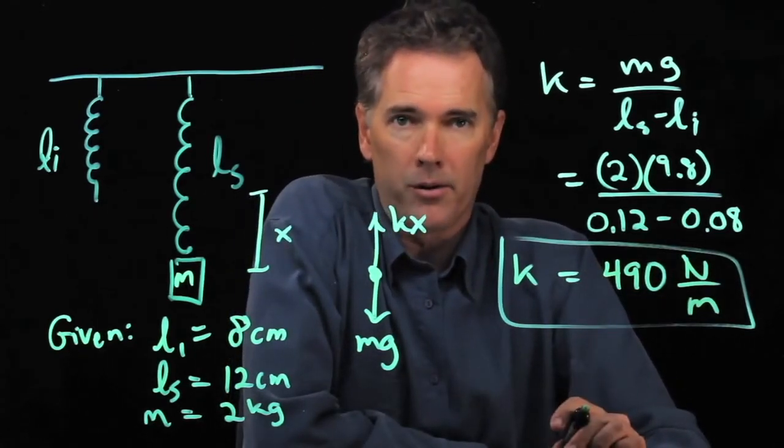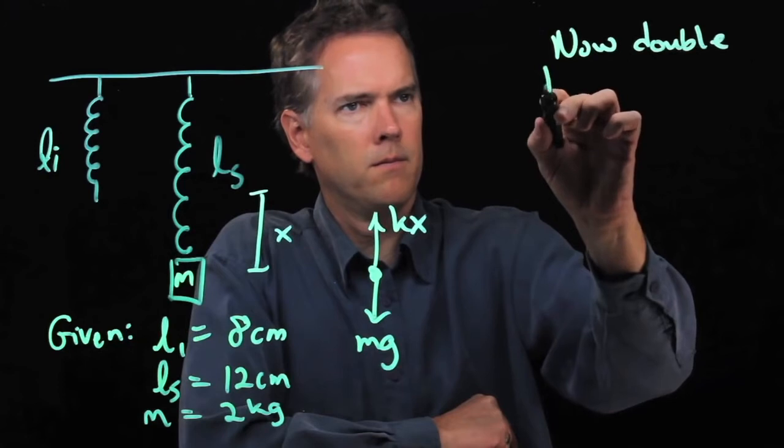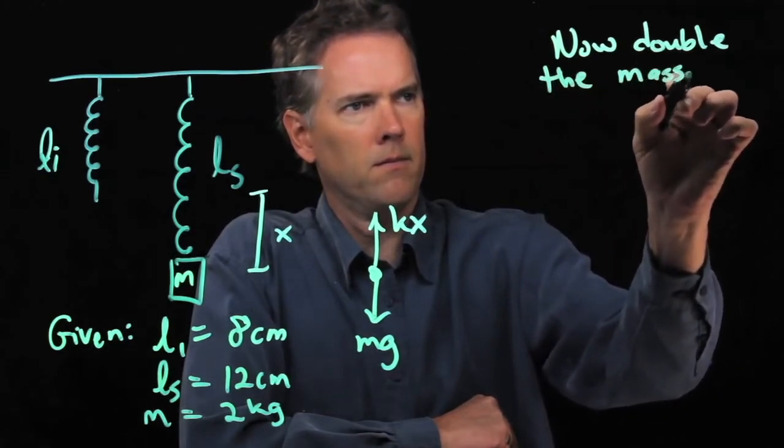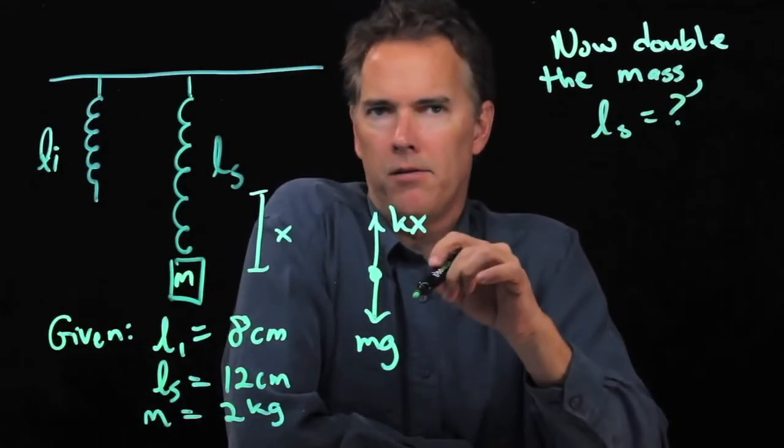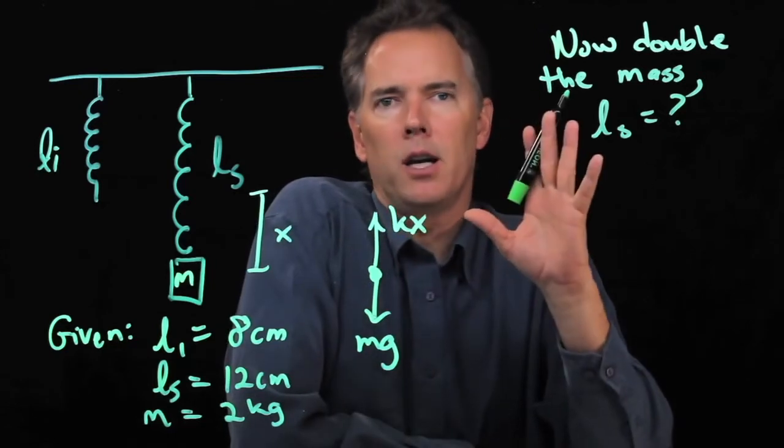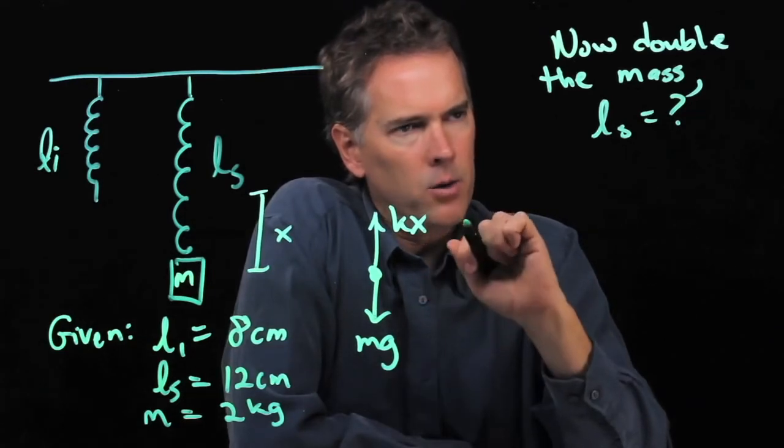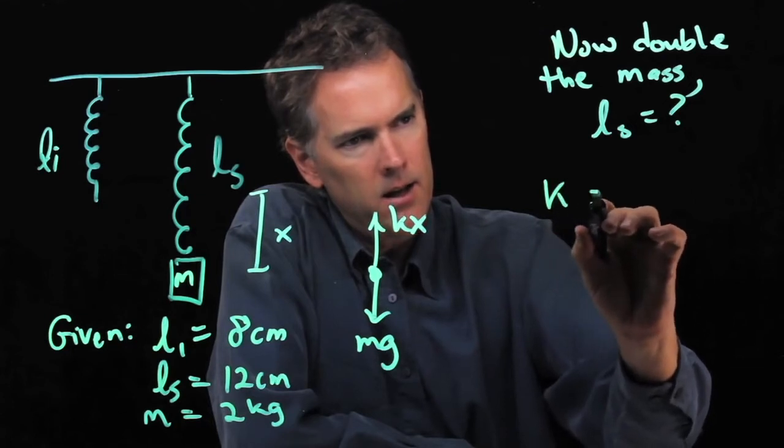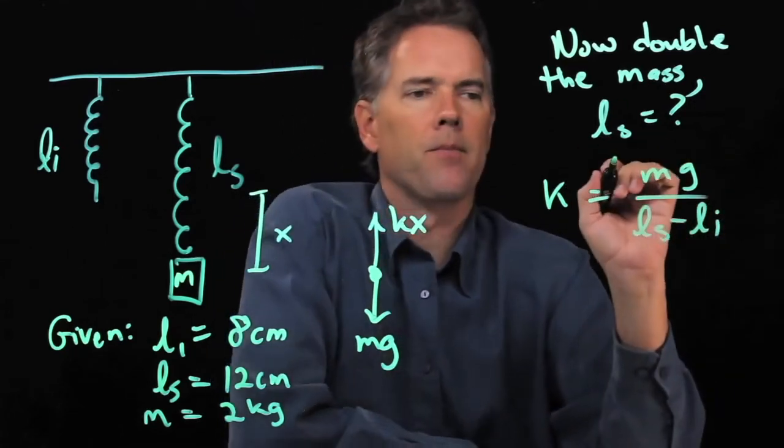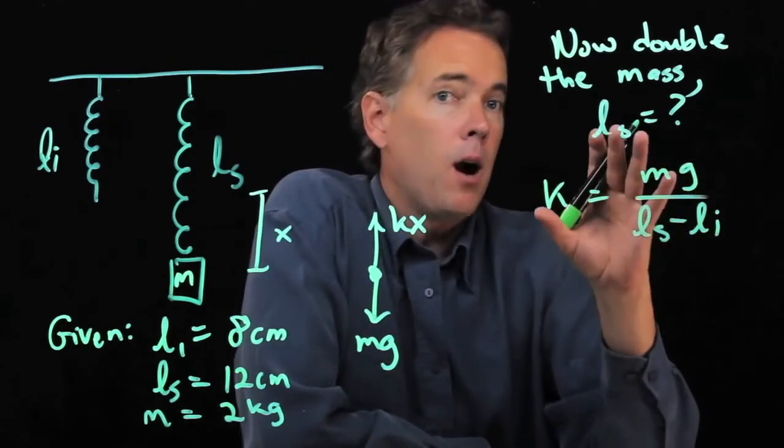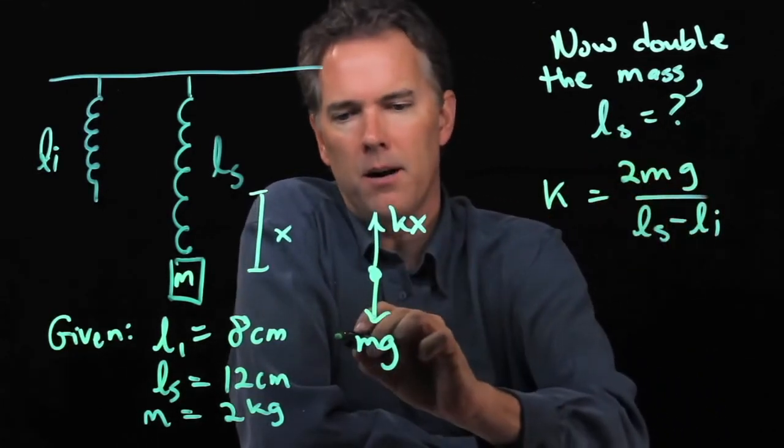Let's ask a follow-up question. Let's say we double the mass that we're going to put on the spring. And let's see if we can calculate the new spring length. Well, let's go back to that last equation that we had. We had an equation that said k was equal to mg over ls minus li. We can use that equation again, but now we're going to change m to 2m. This mg becomes 2mg.